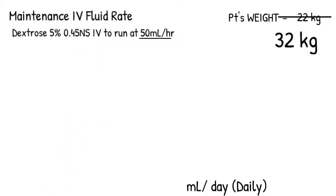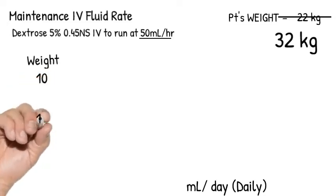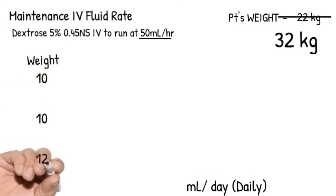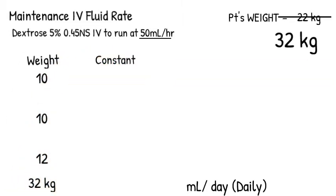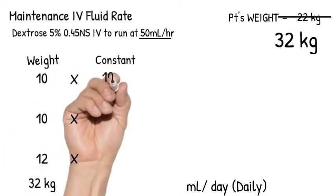My job now as the nurse is to determine if this really is his maintenance rate. Let me take 32 kilograms and set up my two columns here. First column is the weight, which is always variable depending on the patient. So I'll have my first 10 kilograms, second 10 kilograms, and the 12 kilogram that corresponds to the patient's weight of 32. Let me set up my second column here. This is where the constants are: 100, 50, and 20.